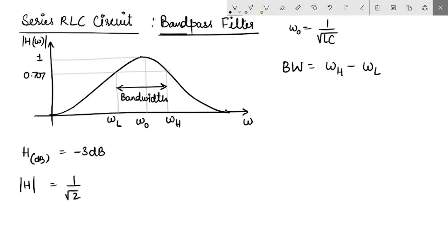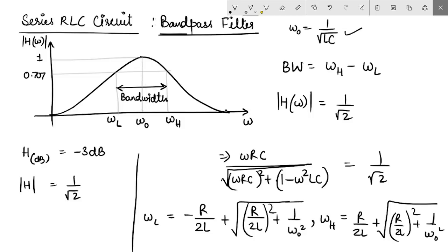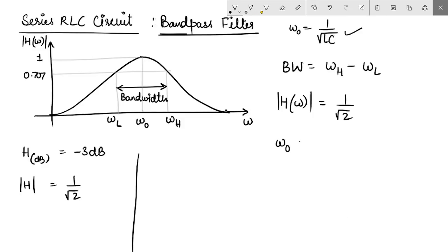To find the value of these frequencies, let us set mod H to 1 by root 2. That means this would be a quadratic equation in ω. When you solve them, you get two frequencies. Looking at the values of ωL and ωH, it may also be stated that ω₀ is actually the geometric mean of ωL and ωH.